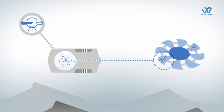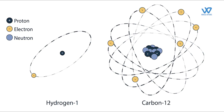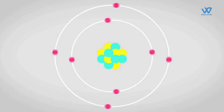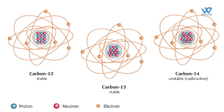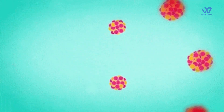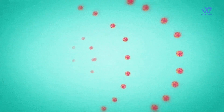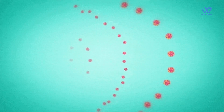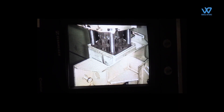Radioisotopes — also called radioactive isotopes, radionuclides, or radioactive nuclides — are defined as atoms that contain an unstable combination of neutrons and protons, or excess energy in their nucleus. The unstable nucleus of a radioisotope can occur naturally or as a result of artificially altering the atom. The best known example of a naturally occurring radioisotope is uranium.